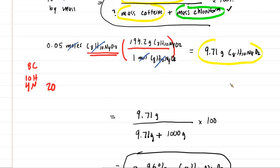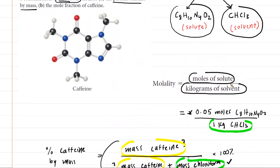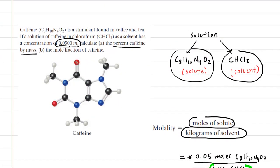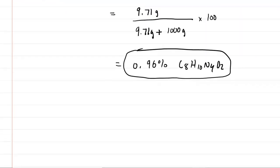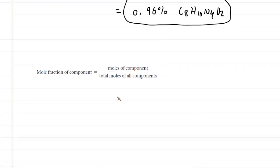So let's go take a look at part B. And part B asks us to find the mole fraction of caffeine. So let's take a look next at the equation for mole fraction. And so here it is. We see that the mole fraction, it says of component. But in this case, our component is going to be caffeine. So we're going to replace that component with the formula for caffeine.